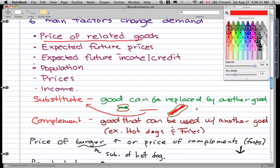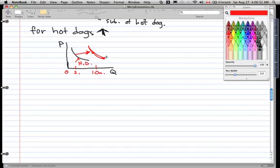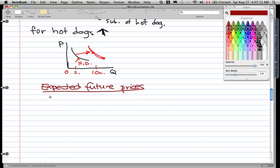The second thing that can change the demand curve is expected future prices. And this concept is pretty simple. For expected future prices, the thing is, when the price is expected to rise in the future, well then, the current demand...